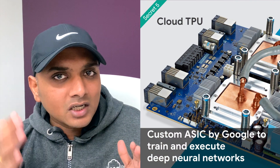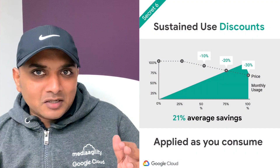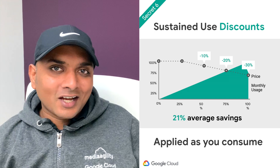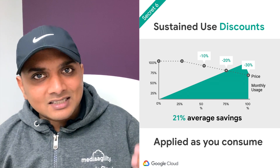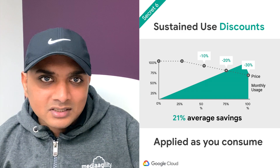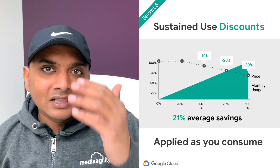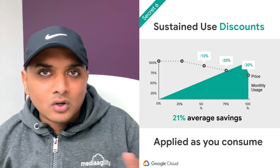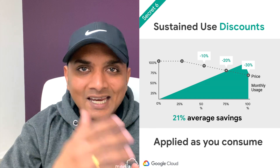So if you're training a complicated machine learning or deep learning model, definitely leverage TPUs to save costs on your training. Secret number six is sustained use discount — a discount that Google gives you automatically without asking. If you're using a machine for more than 50% of the time, a 10% discount kicks in. Using it more than 75% of the time gets you a 20% discount, and using it 100% of the month gets you up to 30% discount for that increment. Overall, your discount will be almost 21% across the month if you're running that machine the entire month.